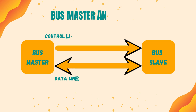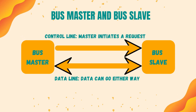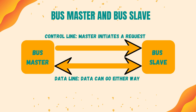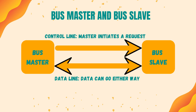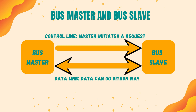The following is a pictorial representation of bus master and bus slave. In this arrangement, there are two devices: a bus master and a bus slave. The bus master initiates a request to the bus slave through the control line. The bus slave reads and analyzes the request and decides whether to send or receive data through the data line. Requests are initiated from bus master to bus slave on the control line, while data can be transferred either way on the data line.